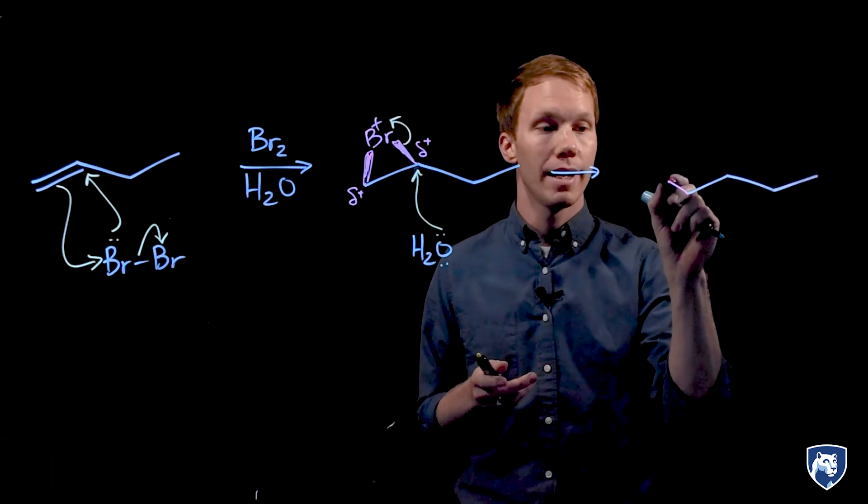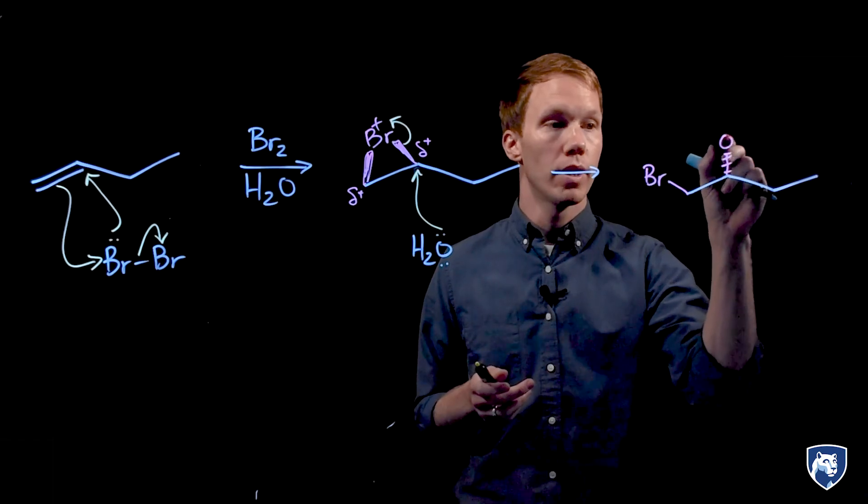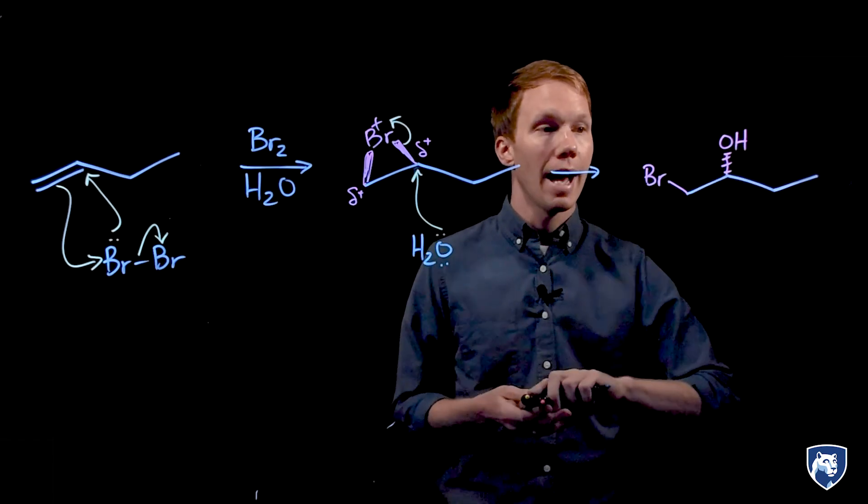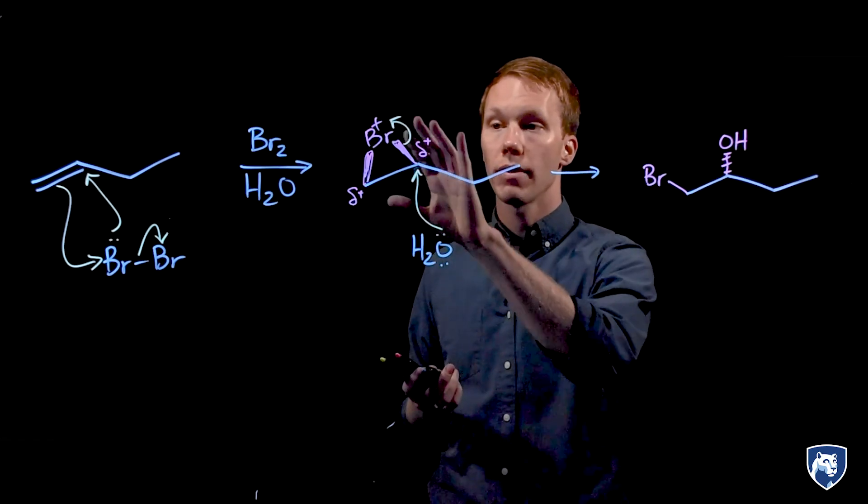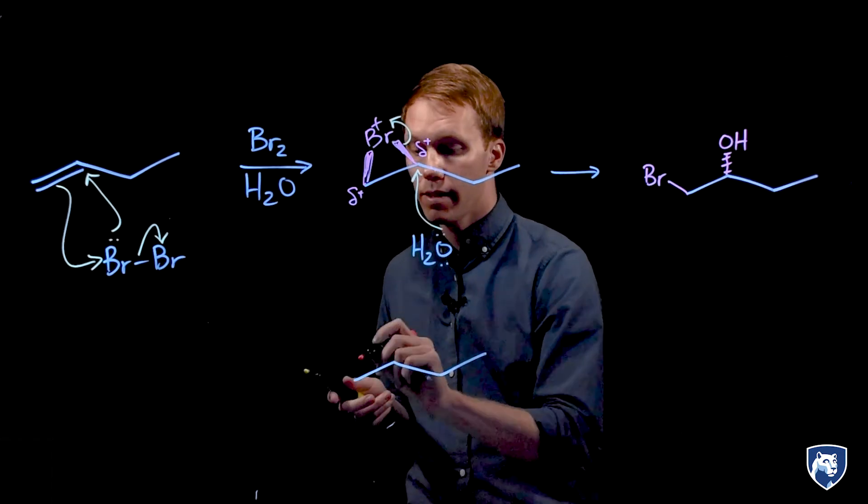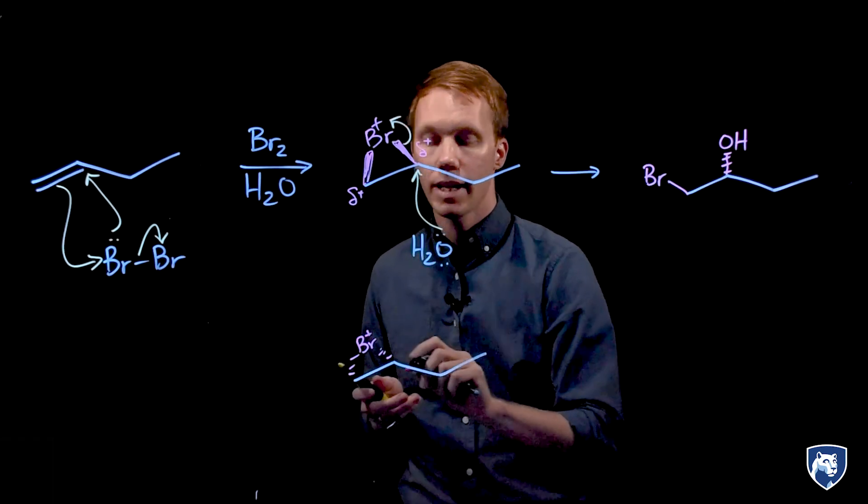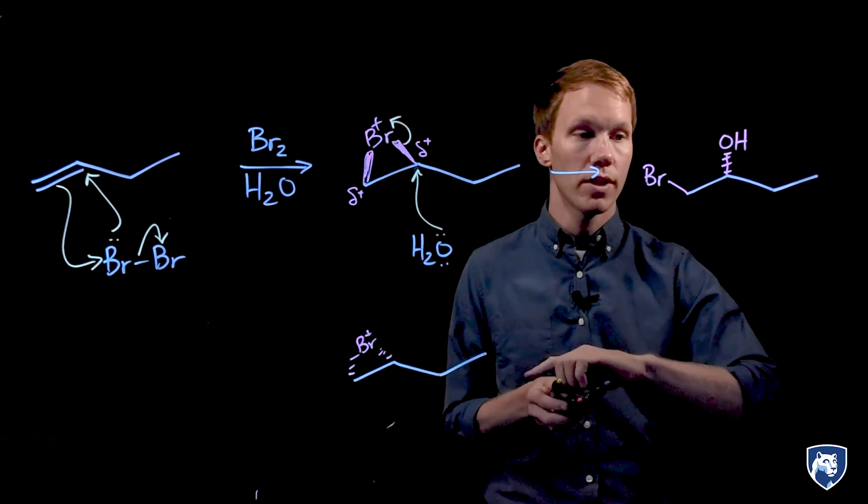The alcohol has added to the more substituted carbon of the bromonium ion. This can add from the back as drawn here. But of course, the bromonium ion also forms on the opposite face of the alkene. So we will end up with a mixture of enantiomers here.